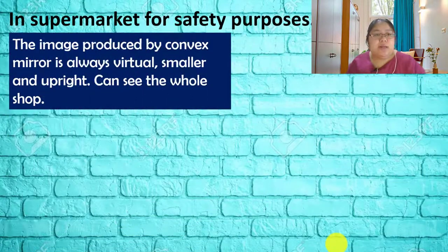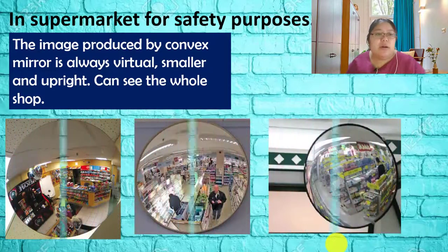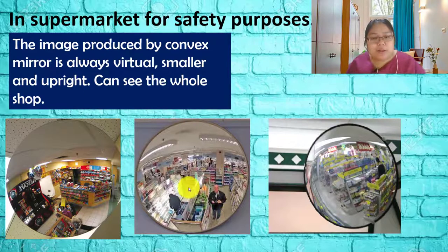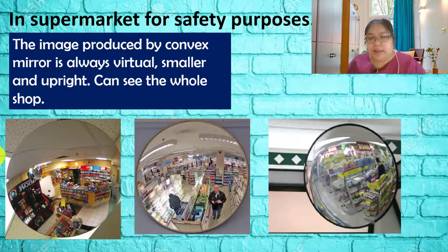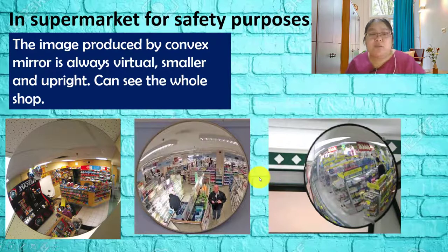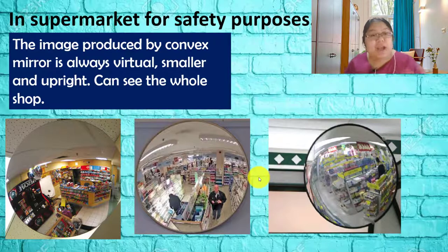Supermarkets also use convex mirrors. The image produced by the convex mirror is always virtual — it cannot be captured on a screen — and the objects appear smaller and upright. Placed at the corner of the supermarket, the mirror lets staff see the overall situation in the shop. This concludes the questions and applications for this topic. The next topic will be 5.2 — thank you for watching.